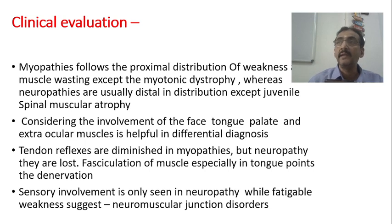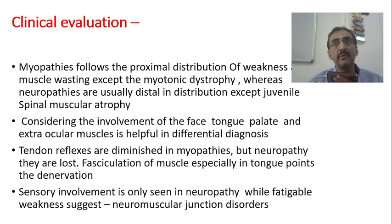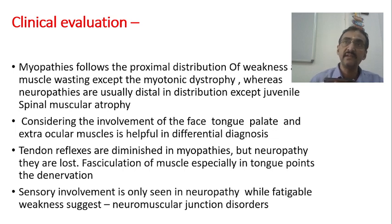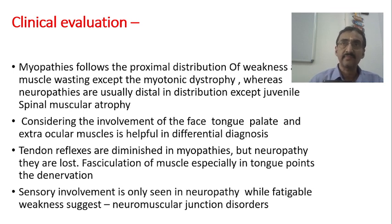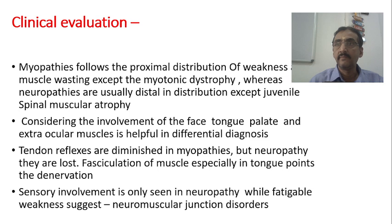Now, more importantly, fasciculation. The presence of fasciculation is very important — it is always suggestive of a neurological disease, especially lower motor neuron disease with atrophy, which is called denervation atrophy. When there is denervation atrophy, you will have fasciculation. If fasciculation is not present along with muscle weakness, probably it is not a neuropathy.